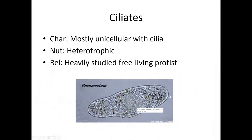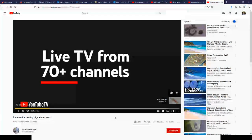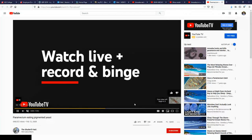Next up, ciliates. They are called that because they have cilia around the outside surface. Cilia is so small it's really hard to see, but it usually ends up looking kind of fuzzy around the outside edge, and so anything that looks fuzzy like that is going to be a ciliate. These are also heterotrophic — that was the amoeba eating the paramecium we saw earlier. Paramecium is the most heavily studied free-living protist; if you go find a drop of water from any lake around here you will find some of these. The cilia helps them swim around in water, but they're not as fast as an amoeba, so they tend to get eaten.